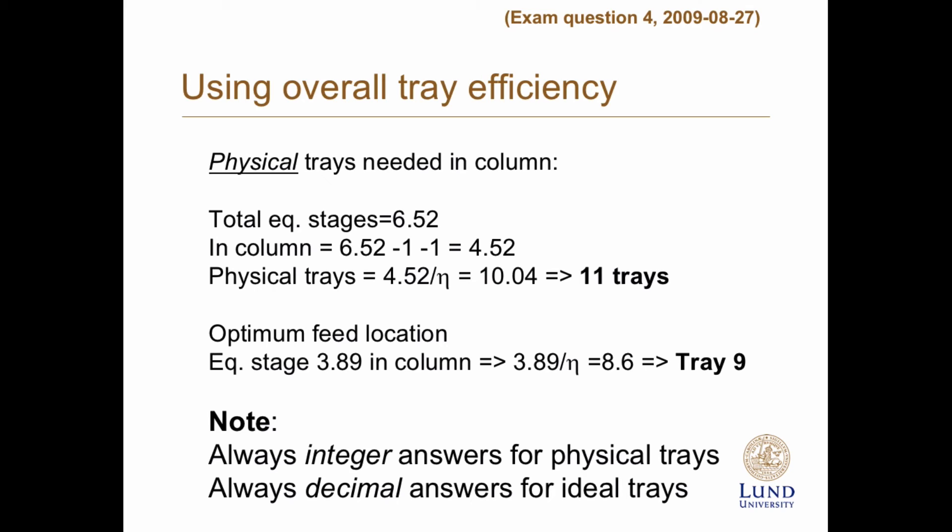And if we ask for physical trays, you should always answer in integers. So you can't have 1.5 chairs, for example. So you can't have 1.5 trays. You need to have an integer number.